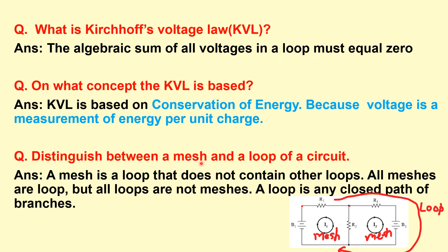What is the difference between a mesh and a loop in a circuit? A mesh is a loop that does not contain any other loops within it, whereas all meshes are loops but not all loops are meshes. In this figure, we have two meshes and one larger loop. The two inner ones are meshes because they contain no loops inside them, while the outer one is only a loop.